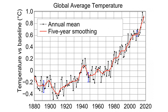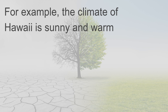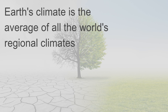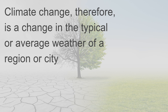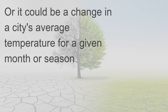The average annual temperature at the Earth's surface has risen since the late 1800s. The climate of a region or city is its typical or average weather. For example, the climate of Hawaii is sunny and warm, but the climate of Antarctica is freezing cold. Earth's climate is the average of all the world's regional climates. Climate change, therefore, is a change in the typical or average weather of a region or city — this could be a change in a region's average annual rainfall or a city's average temperature for a given month or season.